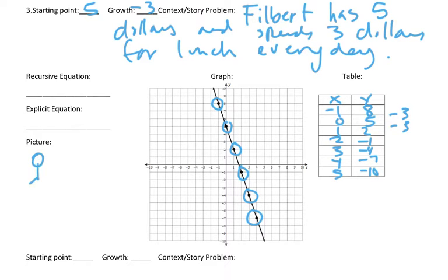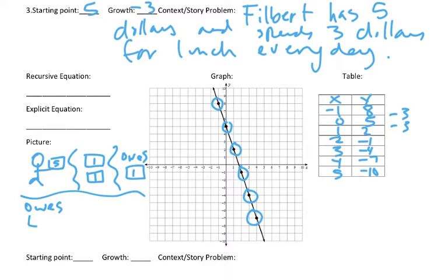So, Philbert, he's got a $5 bill. Then, the next day, he spent $3. So, he's only got $2. Then, the next day, he owes $1. Then, the next day, he owes $4. And so on. Something like that.